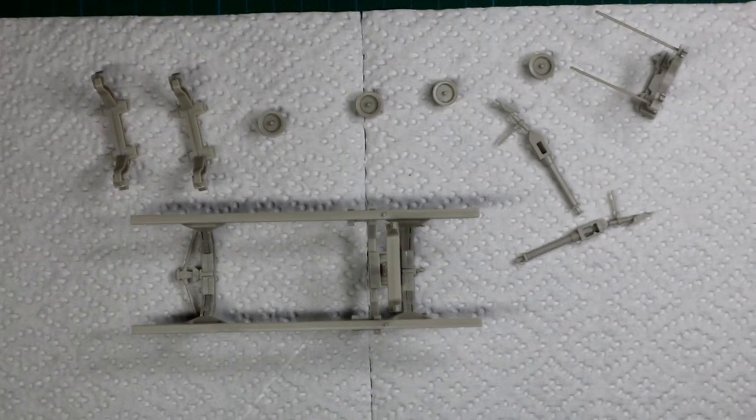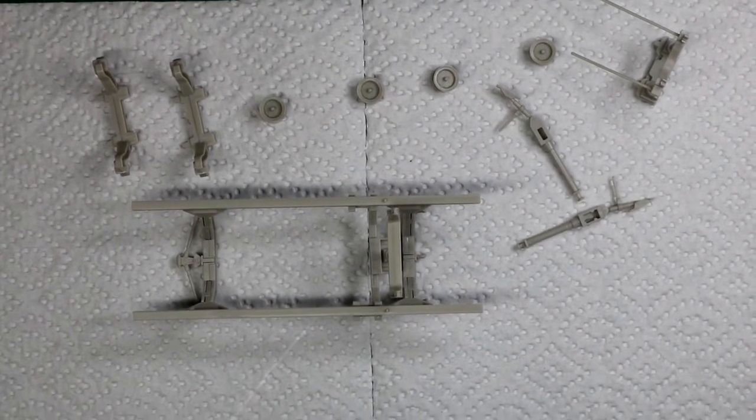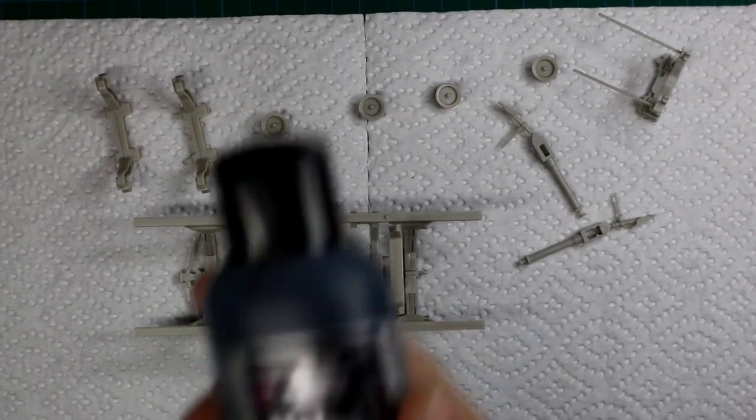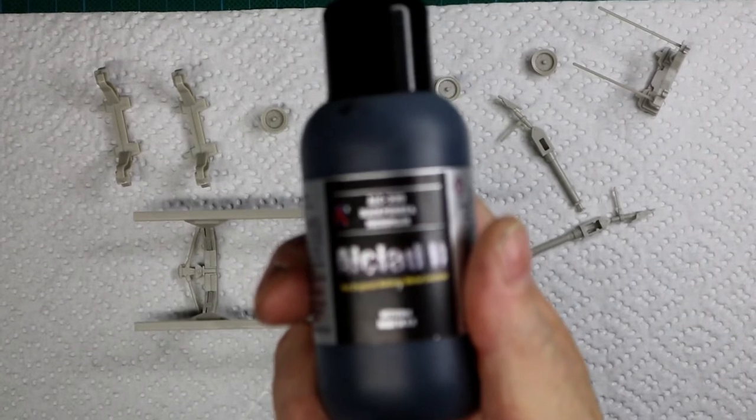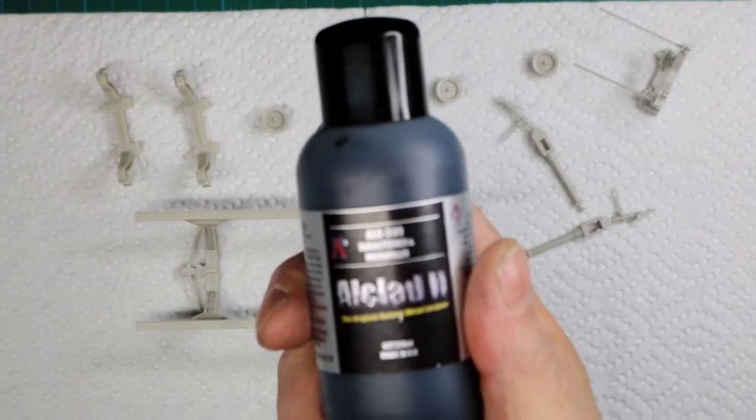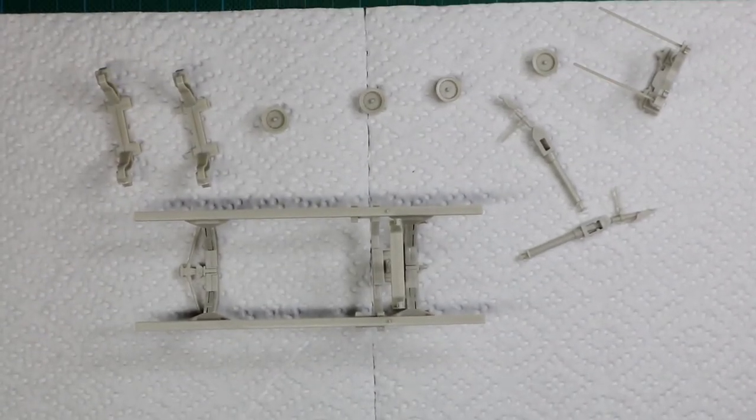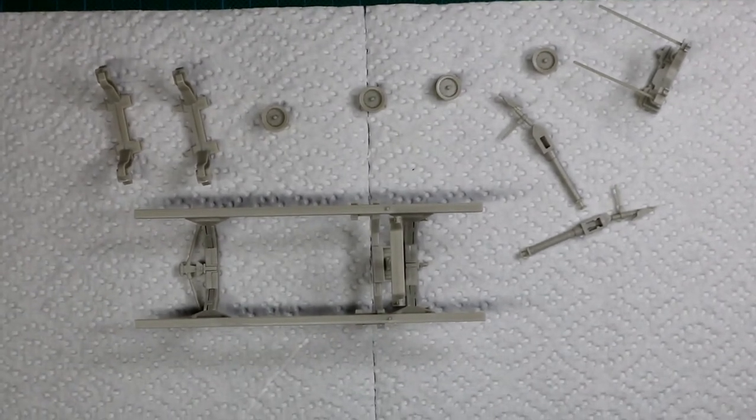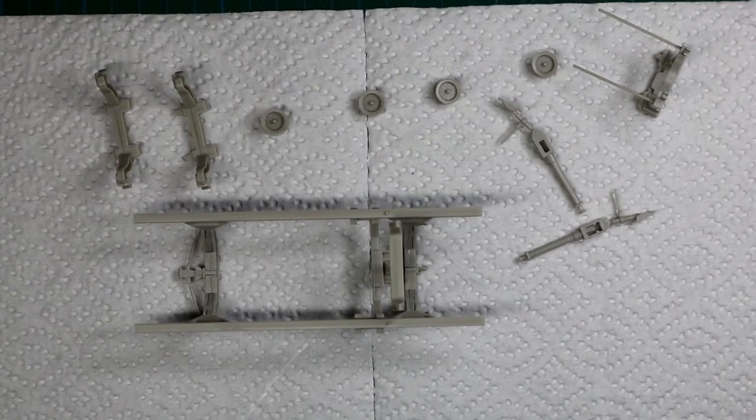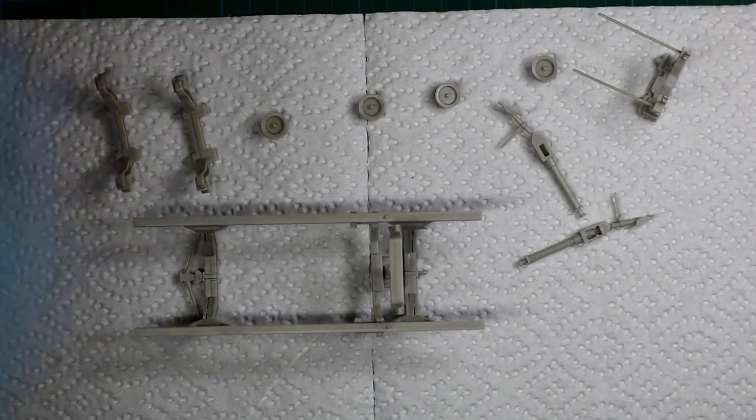What we're going to do now is spray out the dolly and the engine, but first we're going to primer it all. We're going to use Alclad 2 black microfiller and primer. This stuff has some really good properties, the main one being it helps to cover any scratches on the plastic with it being a microfiller, so it's a little bit like a very thin Mr. Surfacer. I'm going to put a little in the color cup, put it well out of the way.